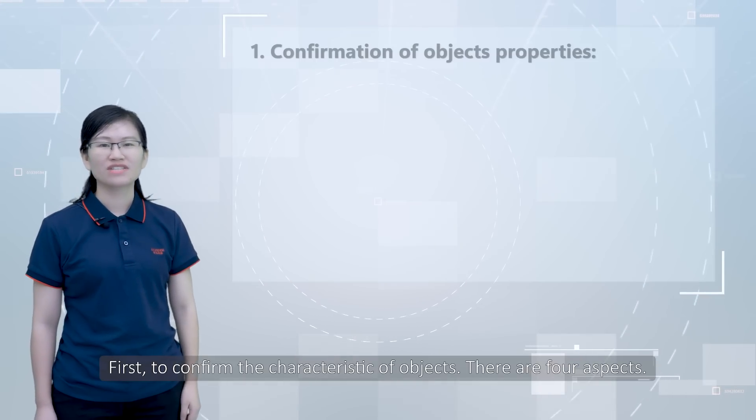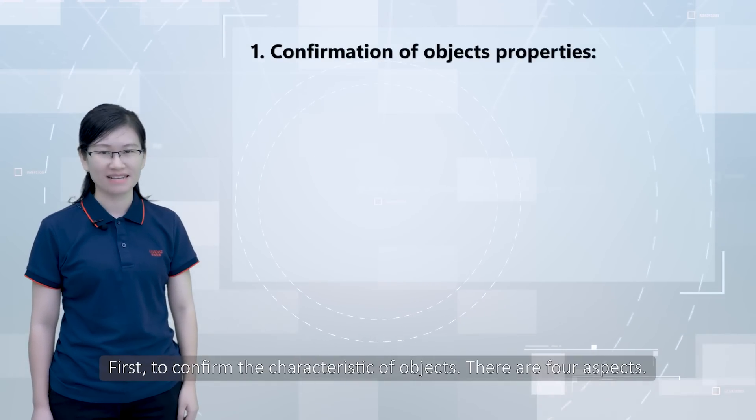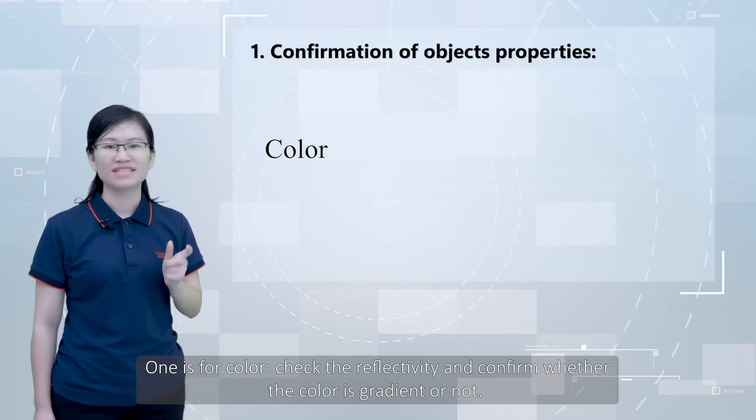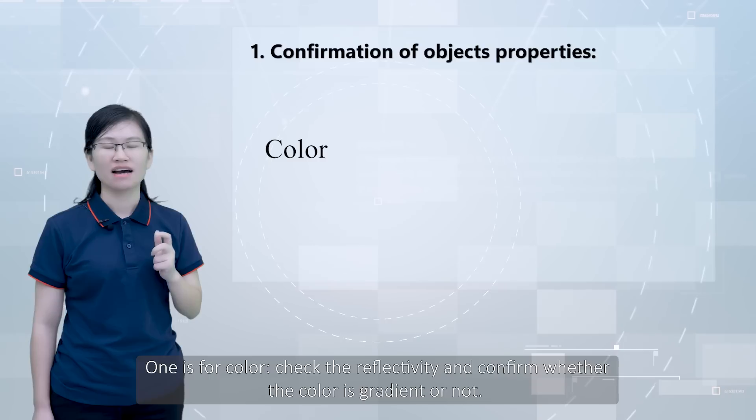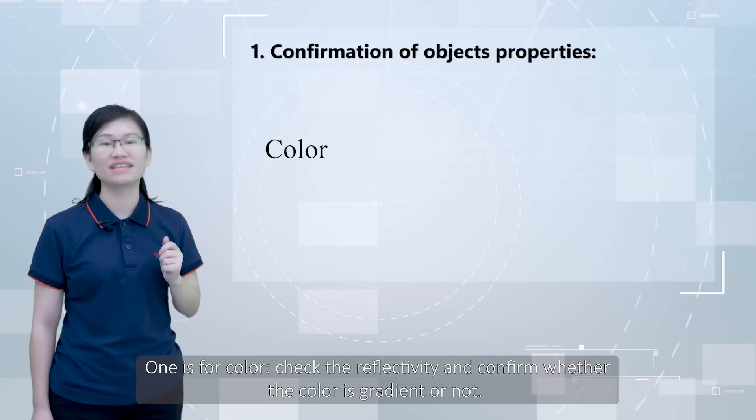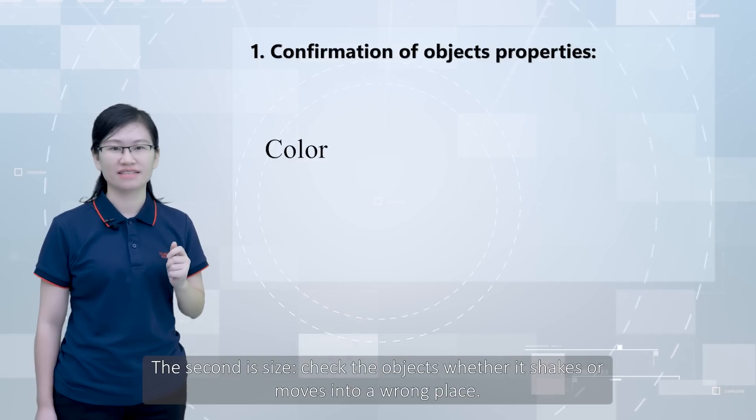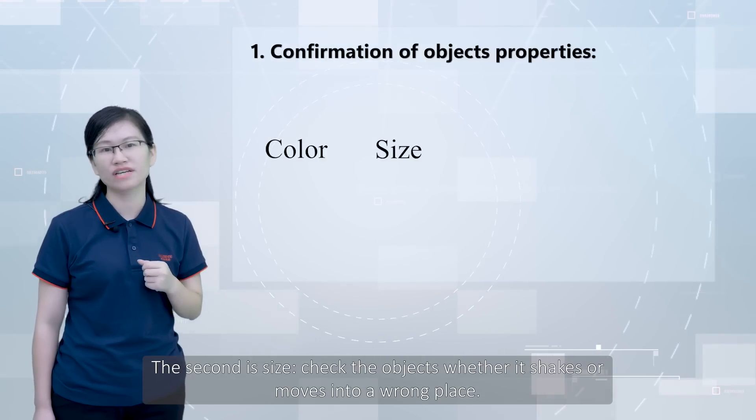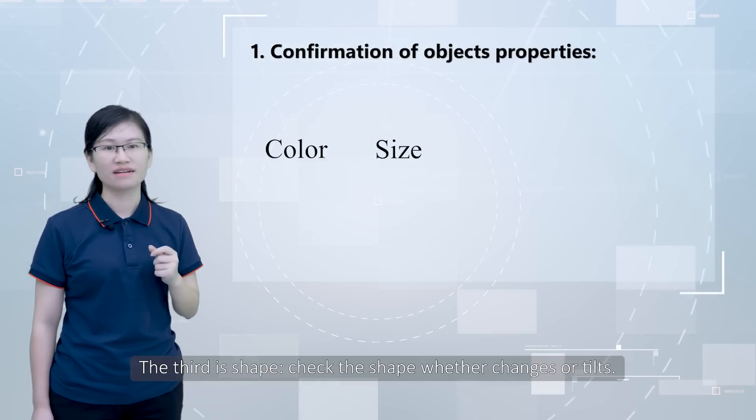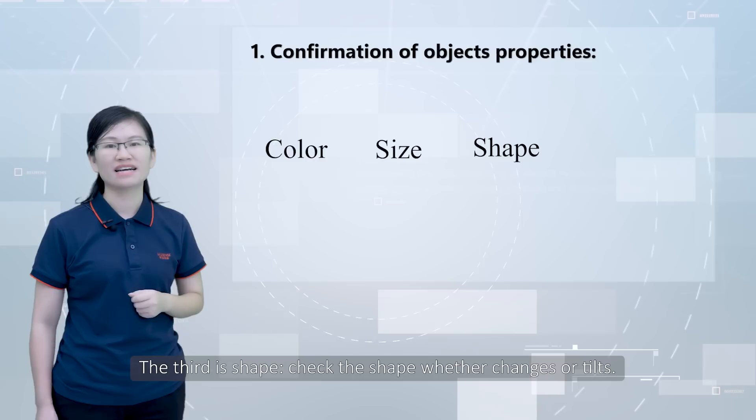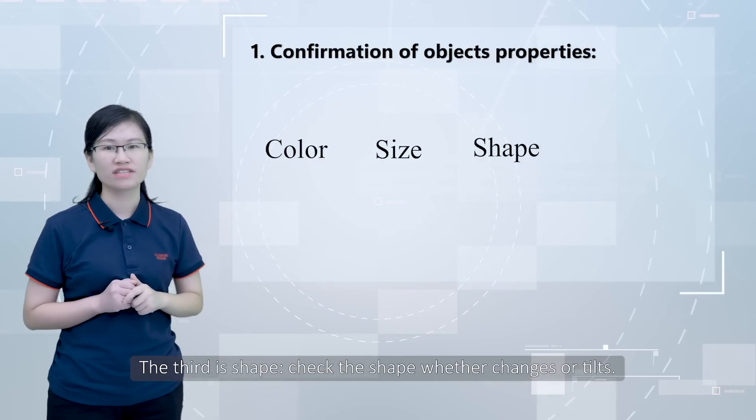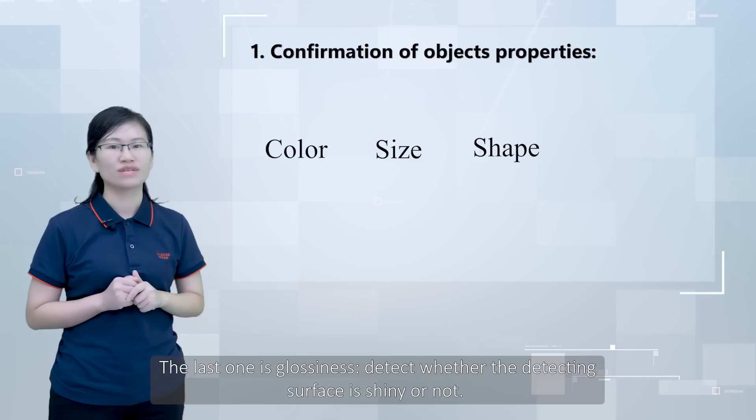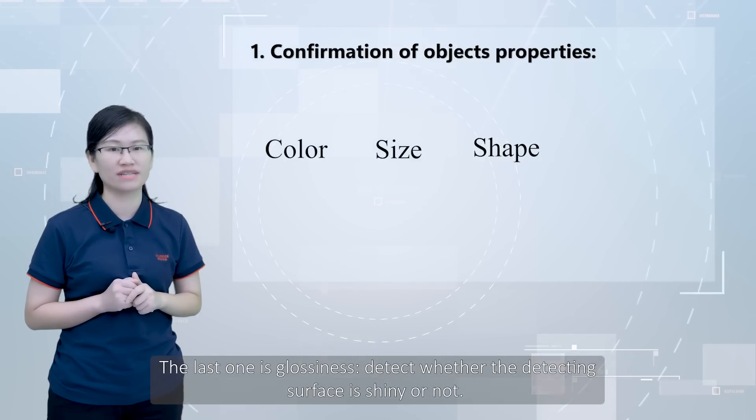To confirm the characteristic of object, there are four aspects. One is color, to detect reflectivity and whether the color is gradient. The second is the size, to detect objects whether they are shaped or moved into the wrong place. The third is the shape, to detect the shape whether straight or tilted. The last one is glossiness, to detect whether the detecting surface is shining or not.